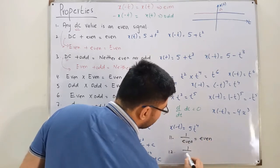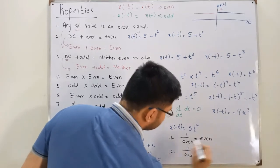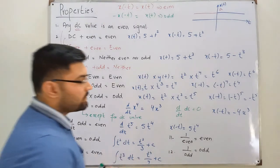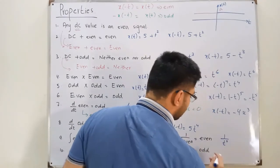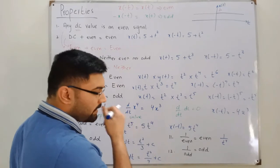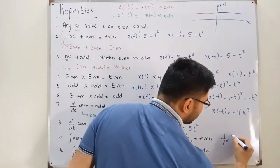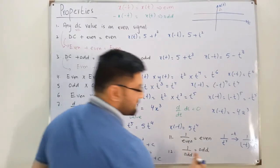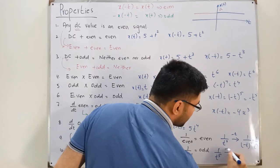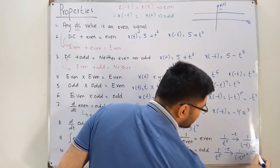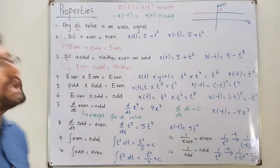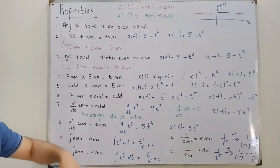The eleventh property: one over an even function is an even signal. For example, 1/t⁴ — if you time-reverse it, 1/(-t)⁴ = 1/t⁴, which is the same, so it's even. The twelfth property: one over an odd function is an odd signal. For example, 1/t⁵ — time-reversing gives 1/(-t)⁵ = -1/t⁵, which is negative times the original signal, confirming it's an odd signal.